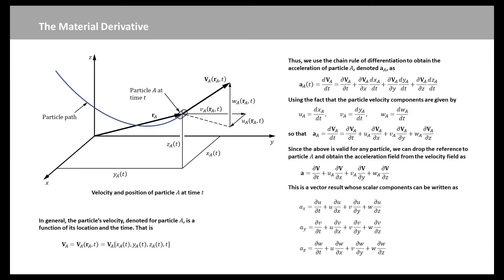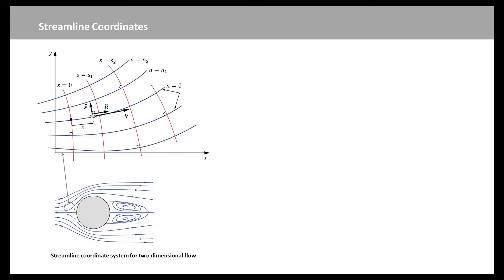This is a vector result whose scalar components can be written as these equations, where Ax, Ay, and Az are the x, y, and z components of the acceleration. The above result is often written in shorthand notation as this equation, where the operator is termed material derivative or substantial derivative. In many flow situations, it is convenient to use a coordinate system defined in terms of the streamlines of the flow. An example for two-dimensional flows is illustrated in this figure.